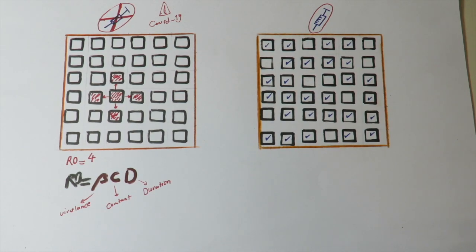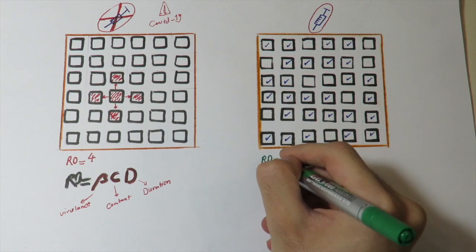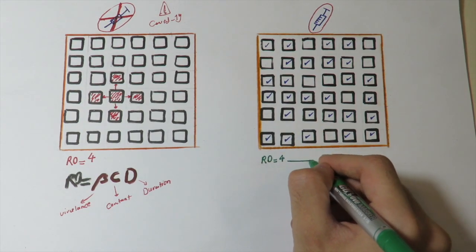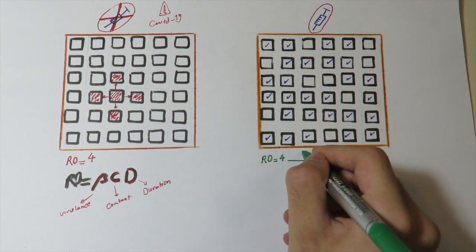Now let's see how much of our population must be vaccinated to reach public immunity. Well, if you want your population to be immunized, your R0, which is 4 in the first place, must become 1 after vaccination.